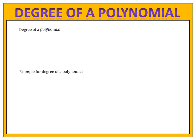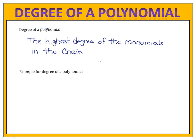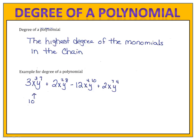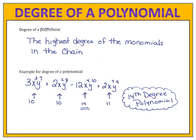We describe a polynomial by looking at the degree of each of the individual monomials and picking the largest. The degree of a polynomial is the highest degree of the monomials in the chain. For instance, we have a large polynomial that has four terms. The first term has the tenth degree, the second term also has the tenth degree, the third term has the fourteenth degree, and the last term has the eleventh degree. The largest degree is fourteen, so we say that this is a fourteenth degree polynomial.